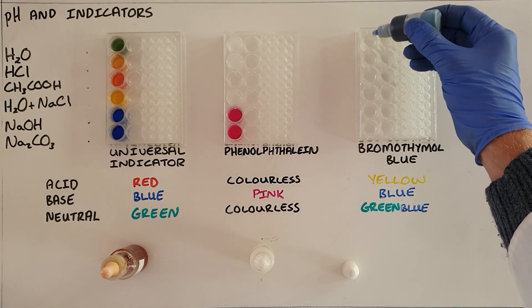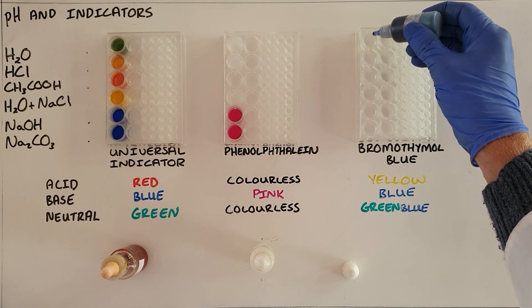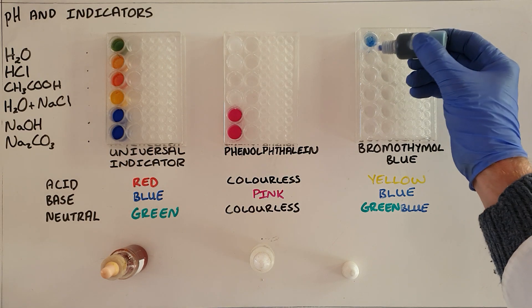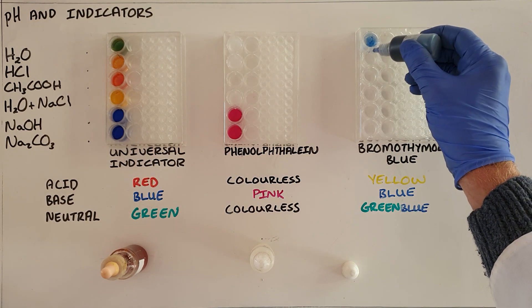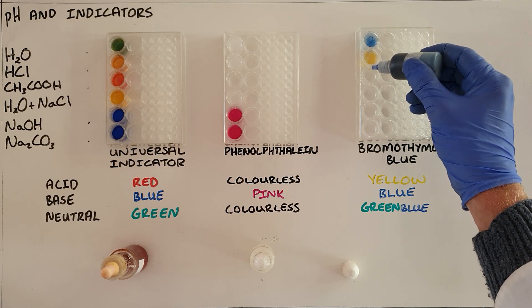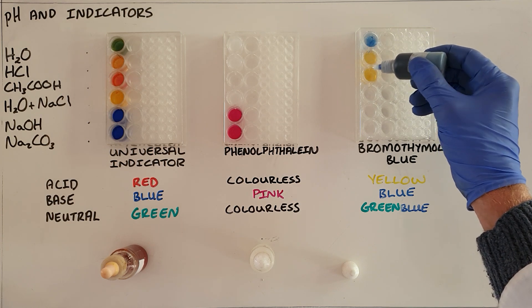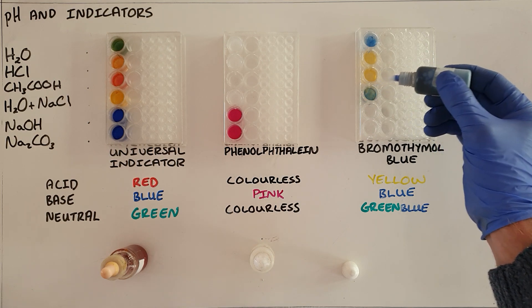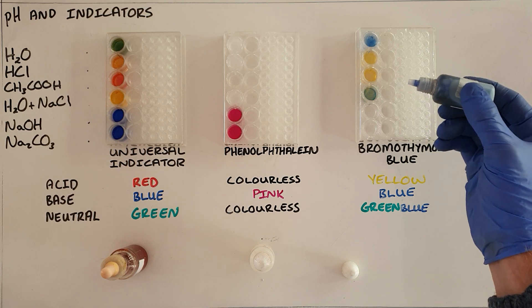So we can see in the water we have that we'll mix it shortly. In HCl we can see we have immediately a yellowish color in acetic acid. Once again we have an acid so a yellowish color.